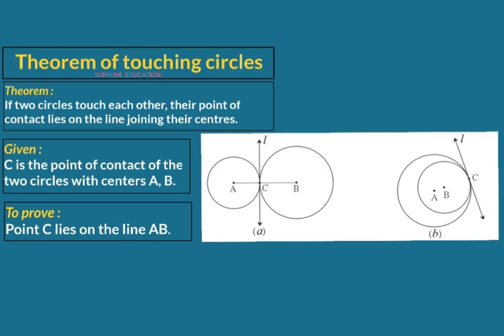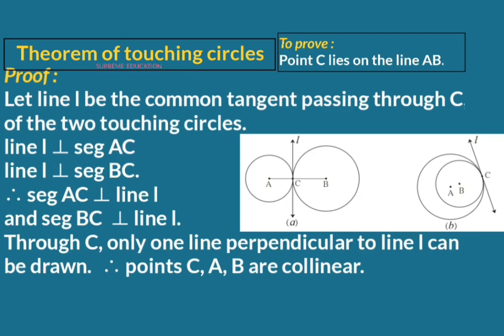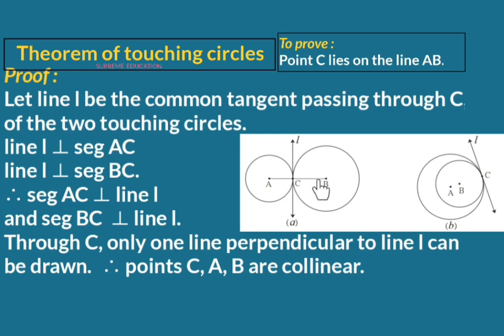Now we'll move towards the proof. Line L is the common tangent passing through point C, meaning point C is the point of contact. By the tangent theorem, the tangent at any point of a circle is perpendicular to the radius at the point of contact. Since line L is tangent to both circles, line L is perpendicular to the radius at point C. For the first circle, the radius at C is AC, and for the second circle it is BC.